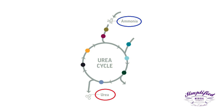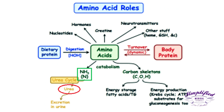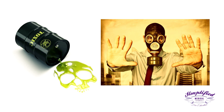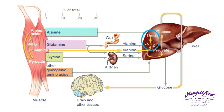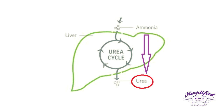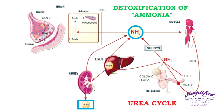The urea cycle is the process of removal of ammonia from the human body. Ammonia is an end product of protein metabolism and is toxic to the human body, especially the central nervous system. Therefore, it has to be removed from the blood by converting it to a harmless, water-soluble compound called urea. This process of detoxification of ammonia is called the urea cycle.